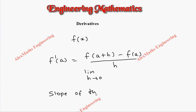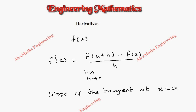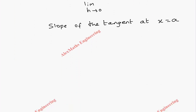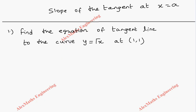This derivative gives the slope of the tangent at x = a. Let's see some examples where we find the equation of the tangent using the derivative. Question number one: find the equation of the tangent line to the curve y = √x at the point (1, 1).